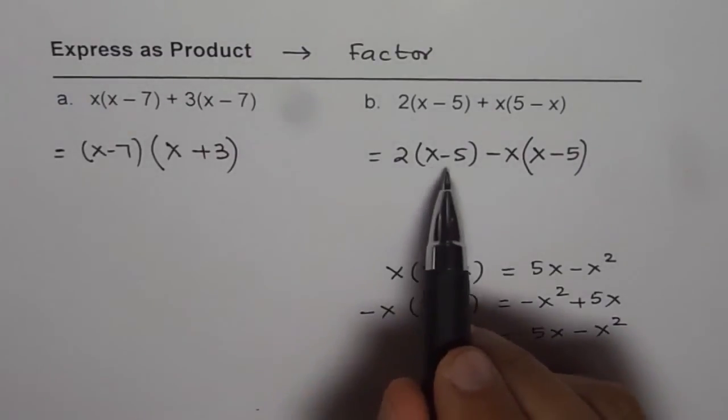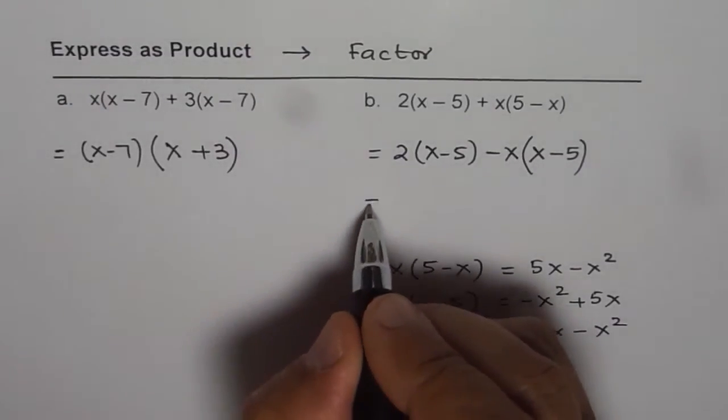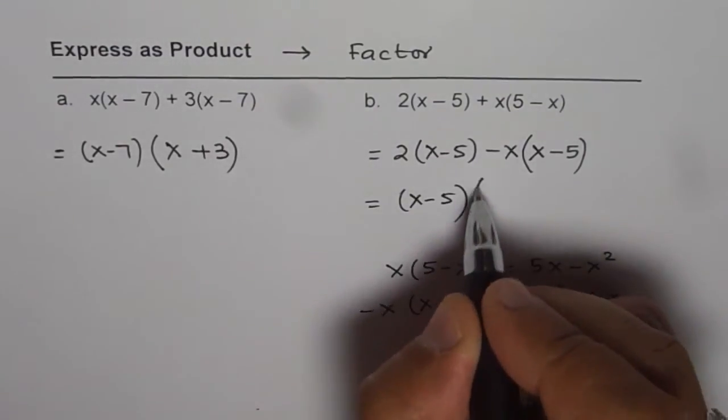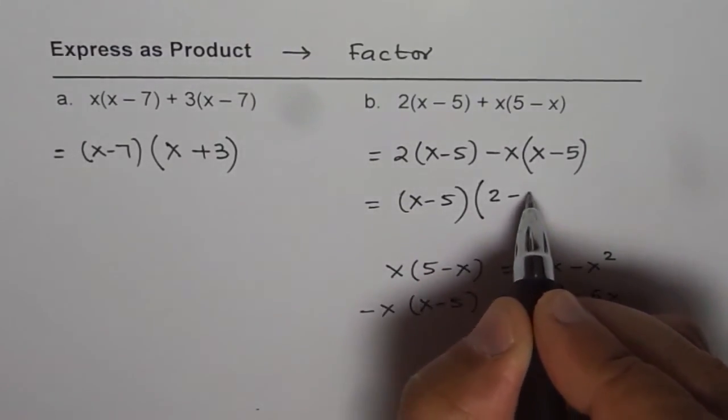Now you can see that x minus 5 is a common factor. So we can write this as x minus 5 times 2 minus x.